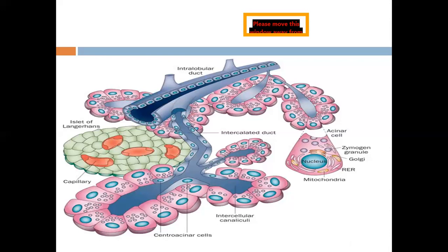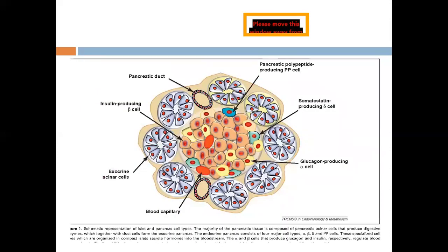These ducts are surrounded by a considerable amount of connective tissue and deliver their content into the main pancreatic duct, which joins the common bile duct before opening into the duodenum at the papilla of Vater.